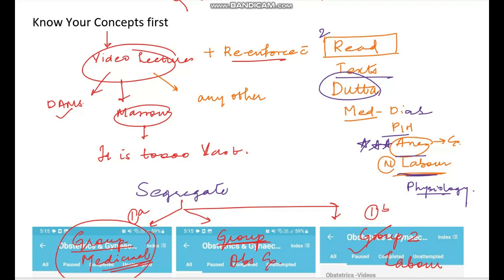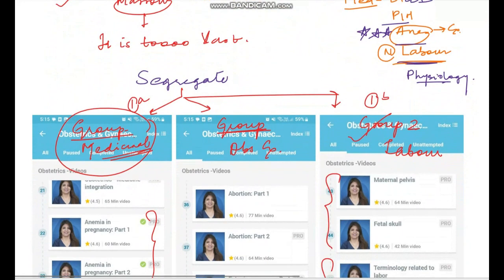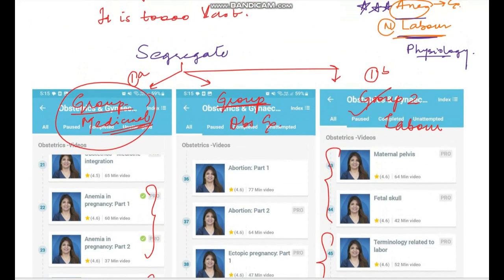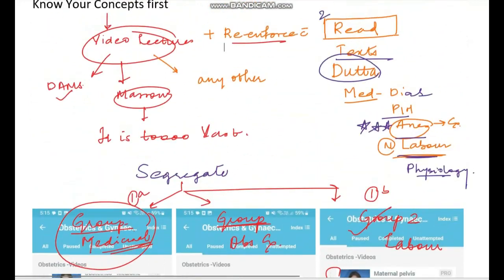So this was all about understanding your video lectures and about reading a particular section from the text. Once you're done with this and gradually, slowly over a period of time, when you go through your postings and you're doing this simultaneously, you'll be able to complete much of your syllabus, even if some part is left behind. I would also tell you, even if you cannot complete radiology in obstetrics or those particular integrated sections that ma'am has taught, you can keep them for later. First and foremost, focus on the basic groups which I have pointed out here. Read them and then towards the end go towards the integration and it will make even more sense when you do it that way.